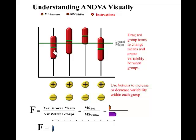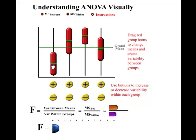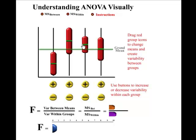As you move a group's mean down away from the grand mean, you notice that the variance between the means increases. And as you move the mean of a group towards the grand mean, you notice that the variance between the means decreases.